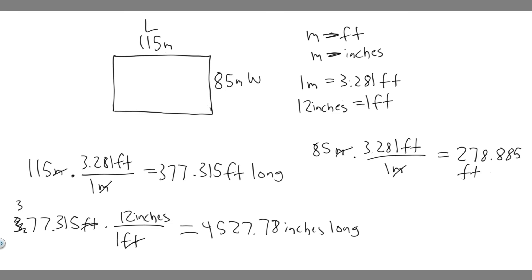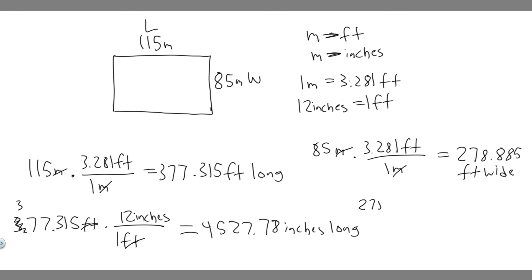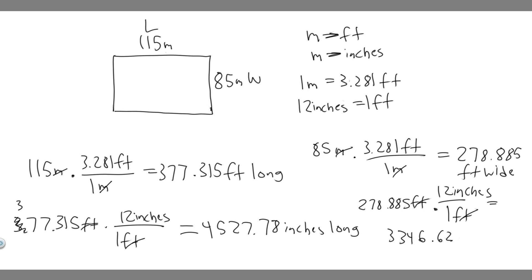Keep in mind this is the width — 278.885 feet wide. Now let's do the same thing to convert to inches. So it's 278.885 feet, and we're converting from feet to inches. We know there's one foot for every 12 inches. The feet will cancel and it'll convert to inches. Take this value and multiply it by 12. You get 3346.62 inches wide.